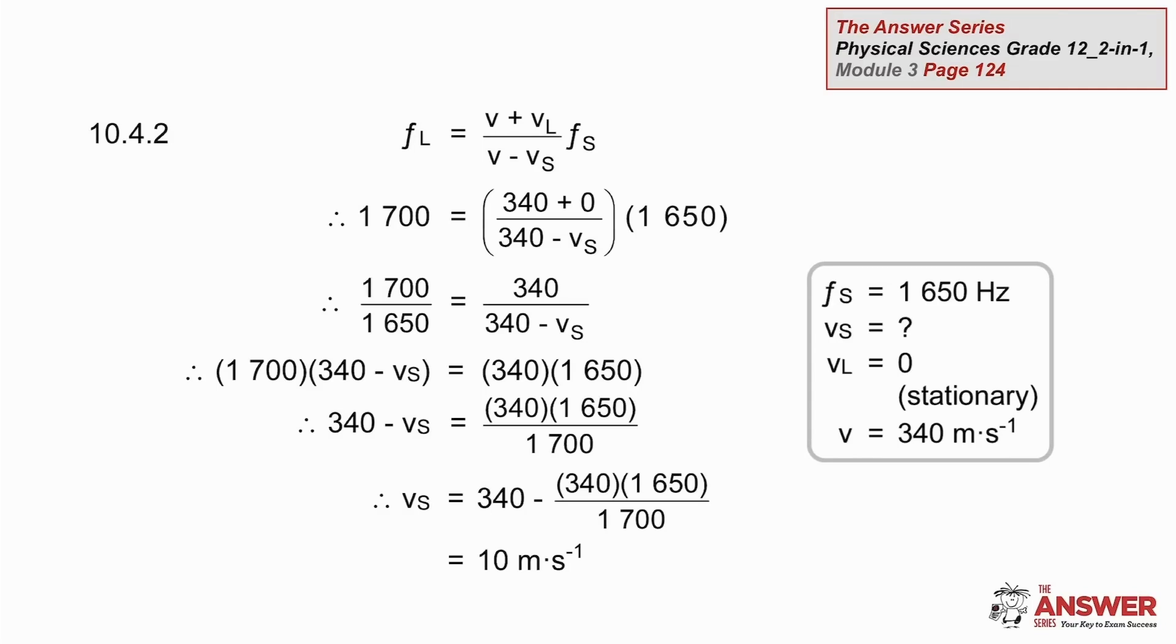Now to the speed of the bird. The listener hears a higher pitch as the bird is flying towards them. So the velocity fraction must be greater than 1. Remember to substitute the 0 as well. A couple of algebraic steps later, we get an answer of 10 meters per second. That is a reasonable speed for a bird, about 36 kilometers per hour.